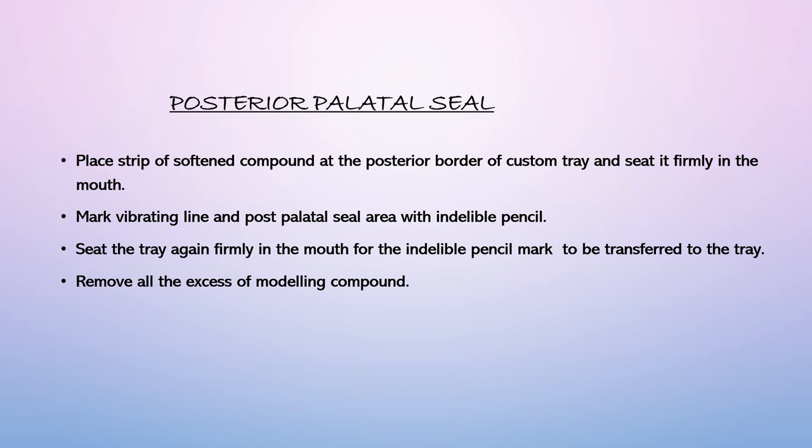For the posterior palatal seal, green stick compound is placed at the posteriormost border. An eosin pencil dipped in spirit is used to mark the PPS area after drying with a cotton swab. The patient is asked to say 'ah' vigorously, which reveals the junction of hard and soft palate — the anterior and posterior vibrating lines. This area is marked, the tray is seated, the patient again says 'ah,' and the marking transfers to the custom tray to reveal any overextensions, which are trimmed with a BP blade.